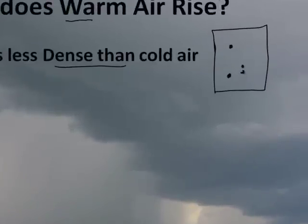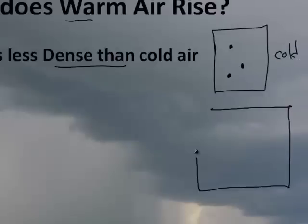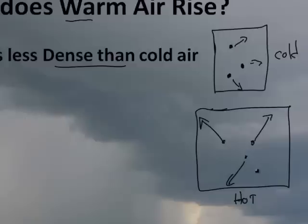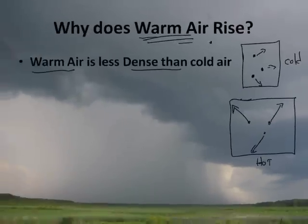Think about it this way: if you have a container filled with, say, three particles of air — three oxygen molecules — this is cold air. Warm air, because it's moving faster, would actually take up more space. The same three particles at a hot temperature would expand, and if they take up more space with the same mass, they have lower density.